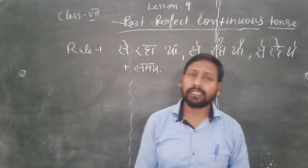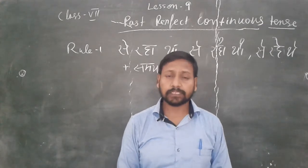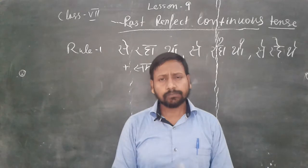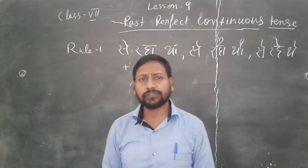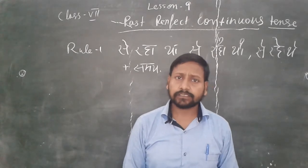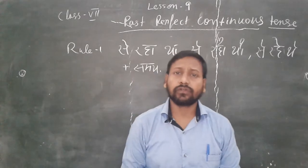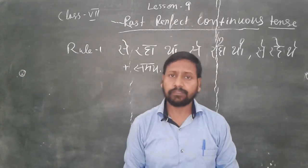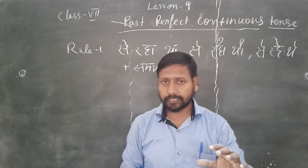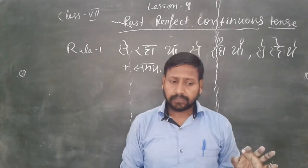In the last video we completed chapter number eight, which was past perfect tense. Today we are going to complete past perfect continuous tense for seventh class, lesson number nine. So what is this? The past perfect continuous tense means an action has been going on continuously with time in the past.